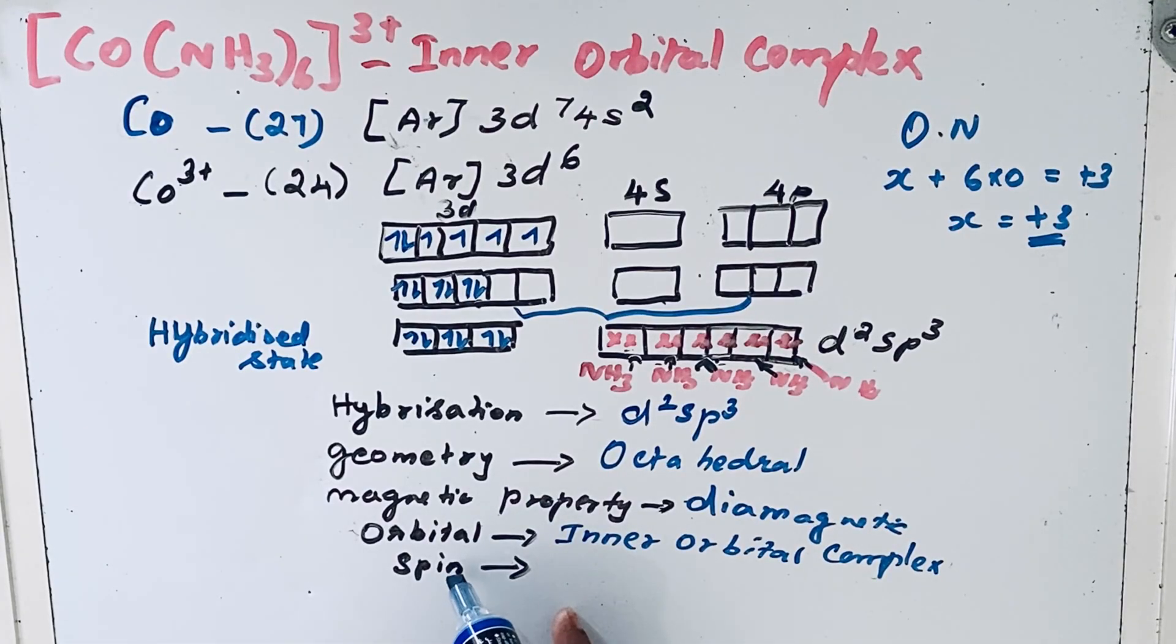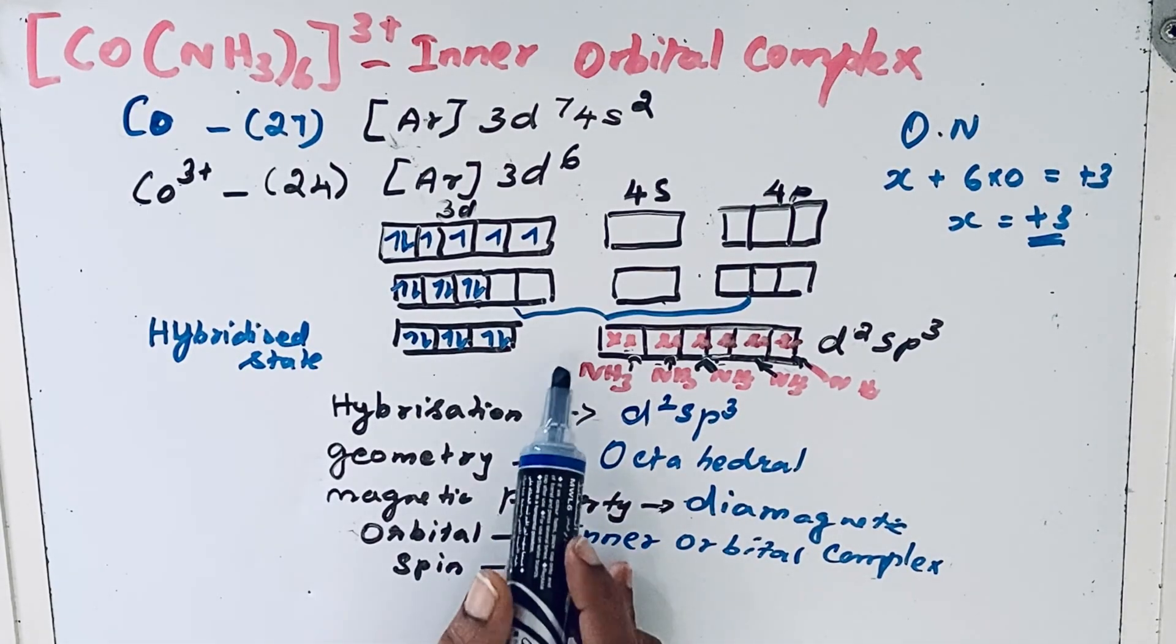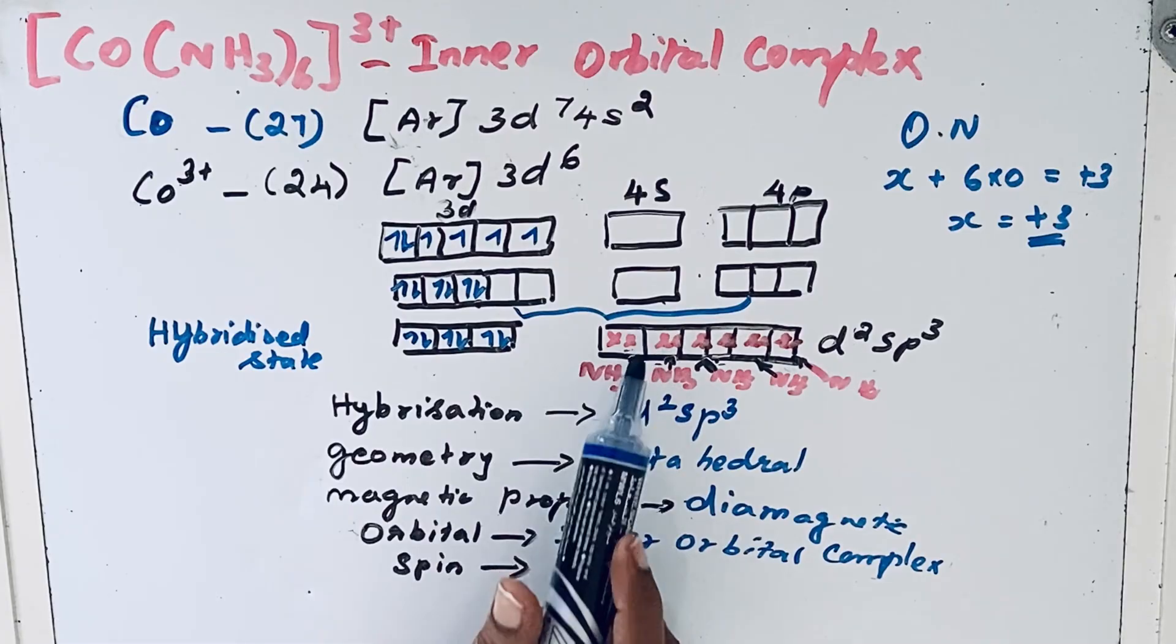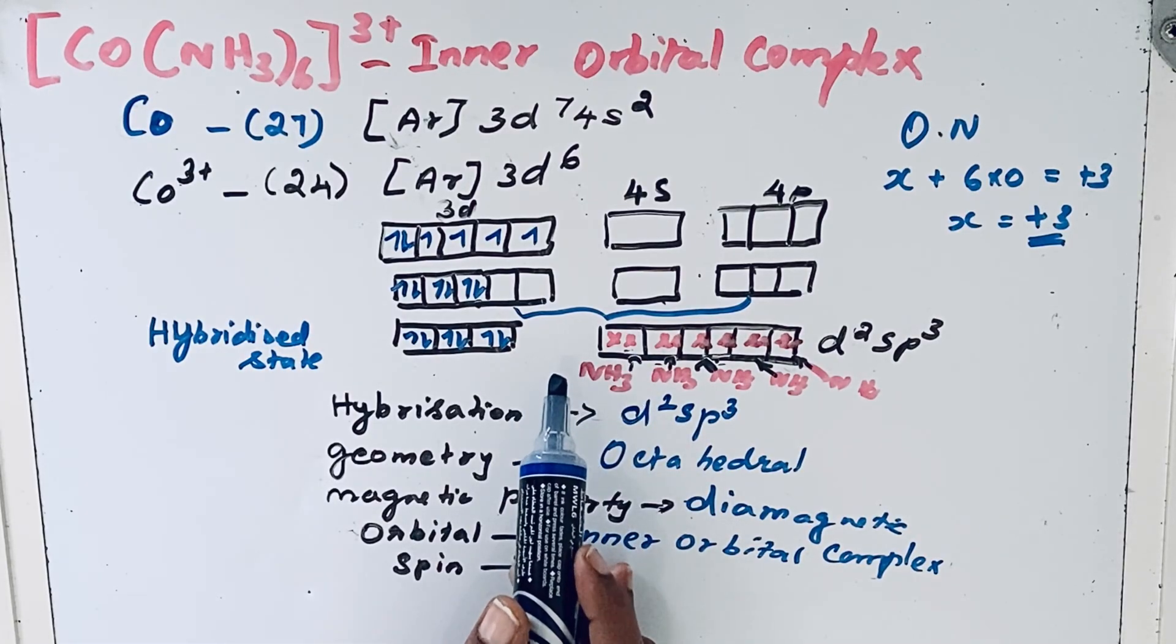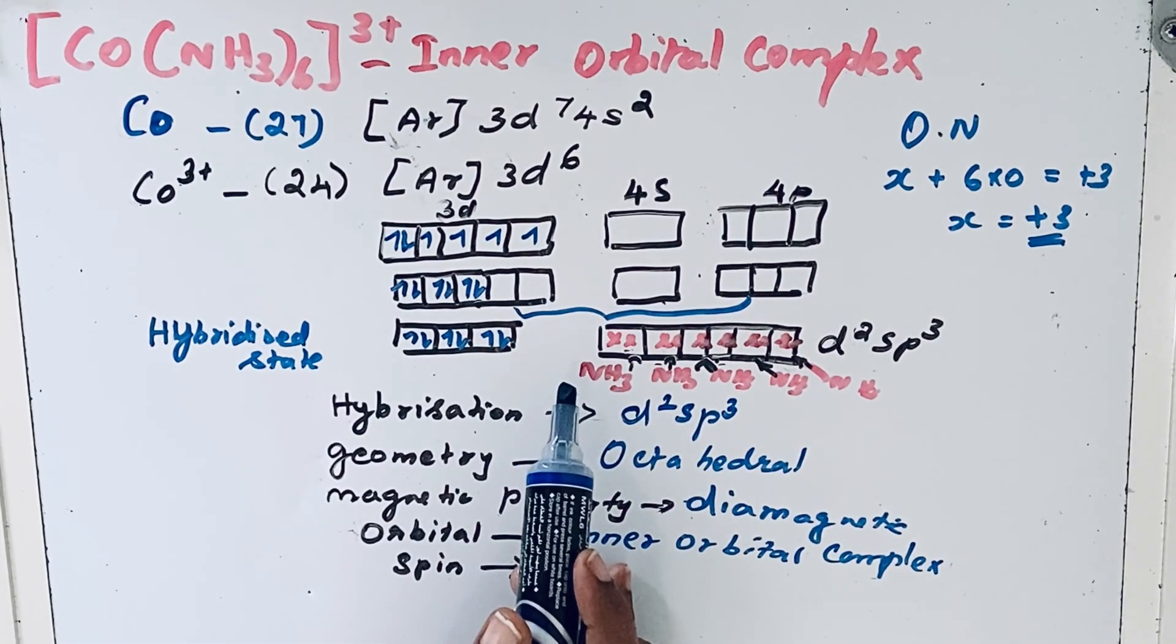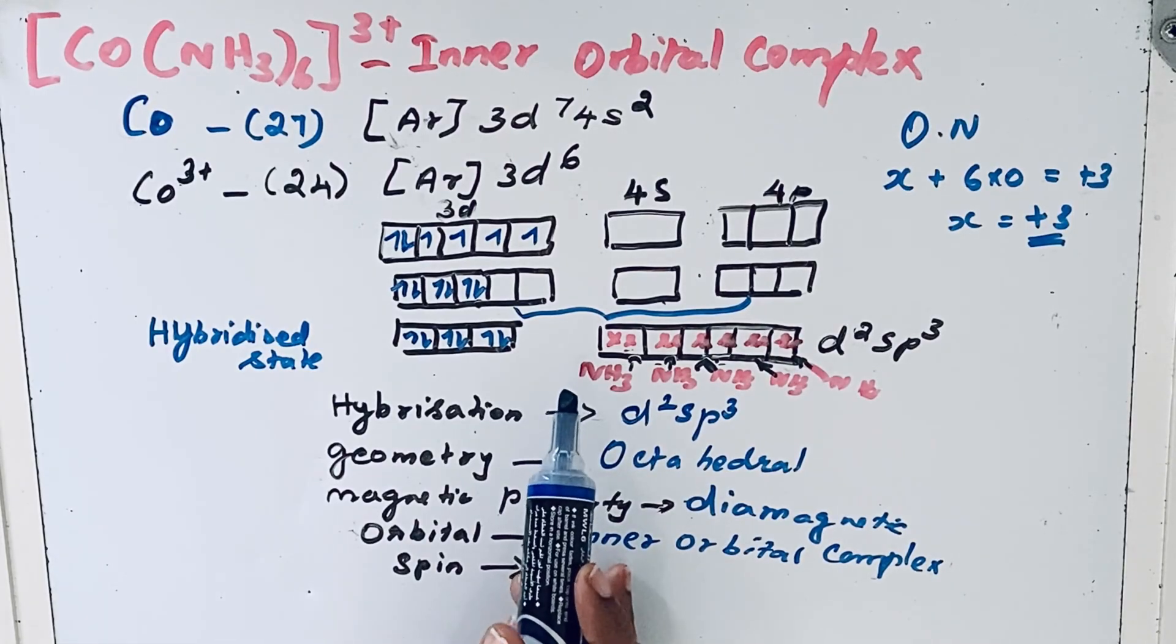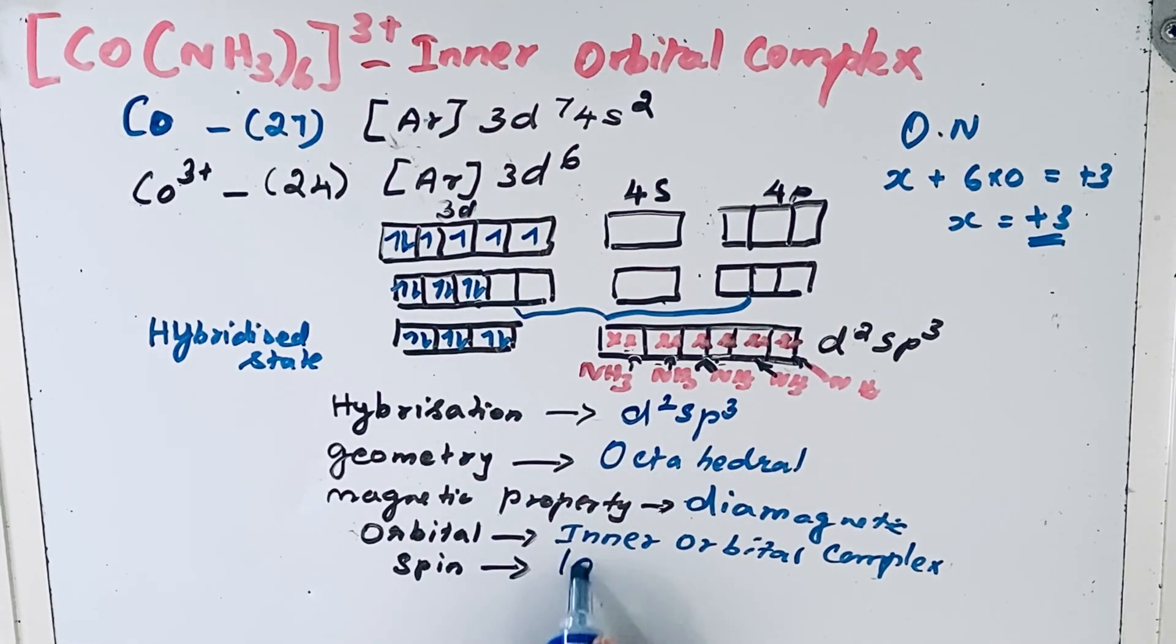Next is the spin of the complex. Here you can see only paired electrons, so because of the paired electrons, the spin is low spin complex or spin-paired complex.